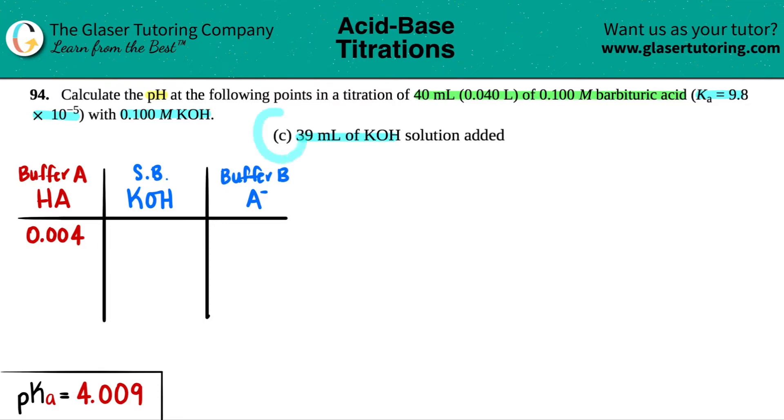Since we're on letter C, there are a couple of things we're going to transfer over from letter B, and that's the use of this chart. If you want to know why we use this chart and how we got the 0.004 number, that's in letter B. If you need a full recap, you can go back there. We also found the pKa of 4.009, which is just taken from the Ka.